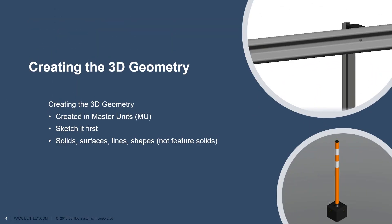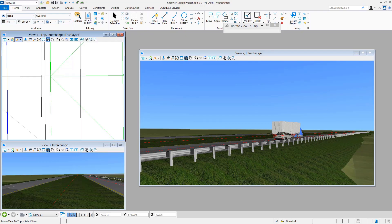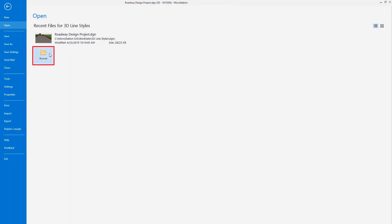We'll start off with a slip form barrier — the kind of continuous concrete barrier you see when driving down the interstate. We want a custom line style to represent something like that. To show how we'd go about this, I'm going to switch over to a DGN file that I have with some 3D geometry to get us a bit of a jump start.